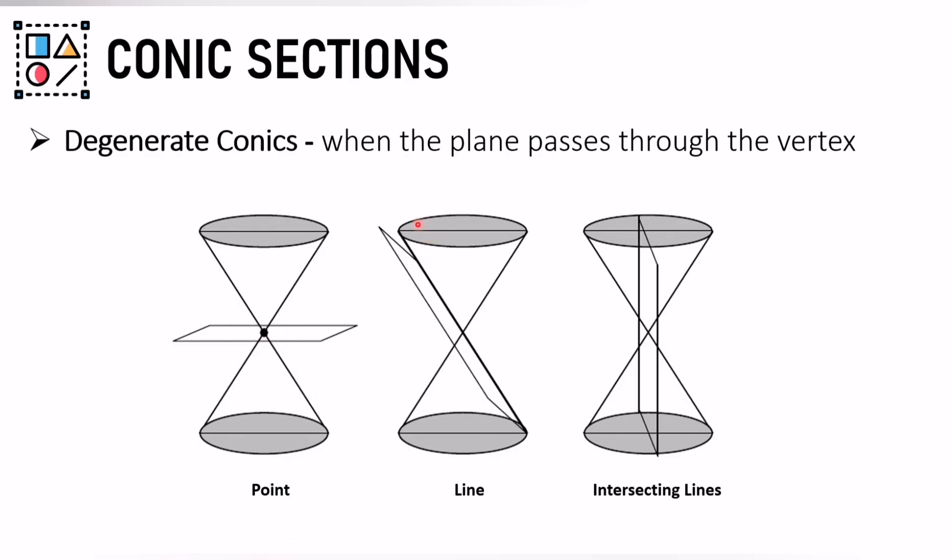If it intersects along the edge of the cone, then you have a line. You form a line. But if it intersects in the middle, then you have intersecting lines.